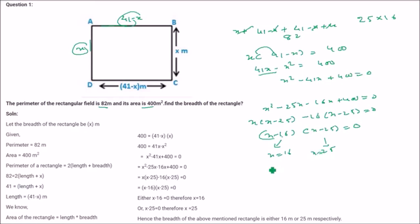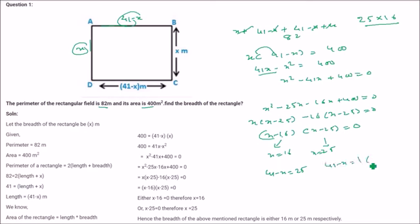If you take x equal to 16, then 41 minus x will be 25. If you take x equal to 25, then 41 minus x will be 16. So the length and breadth are 16 and 25. The breadth can be either 16 or 25.